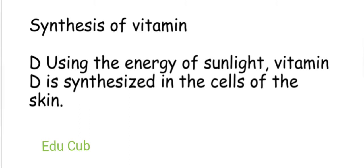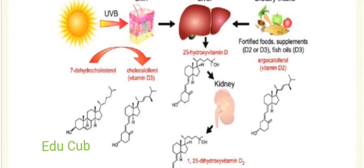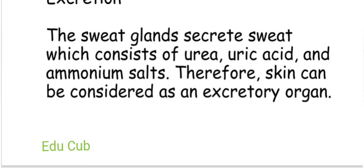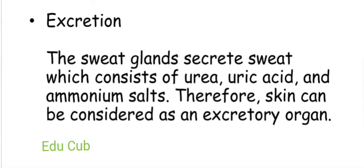The next function is synthesis of vitamin D. Using the energy of sunlight, vitamin D is synthesized in the cells of the skin. The next function is excretion. The sweat glands excrete sweat which consists of urea, uric acid, and ammonium salts. Therefore, the skin can be considered an excretory organ.